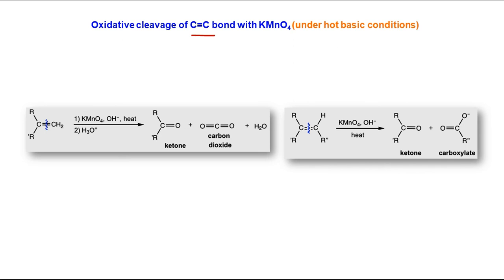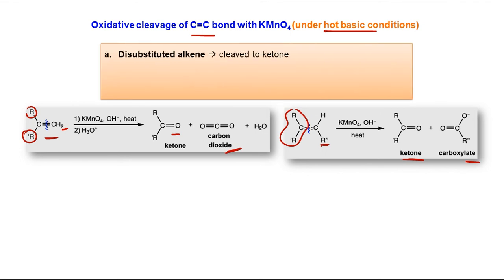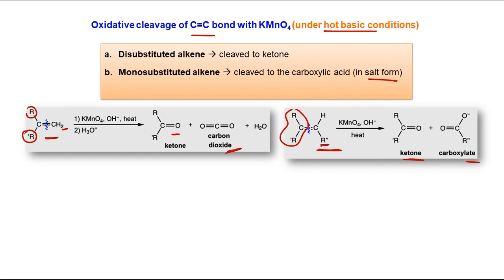We know that when we treat an alkene with KMnO4 under cold conditions it is dihydroxylation, but under hot basic conditions C-C bond cleavage is possible — this is known as oxidative cleavage. If the left-hand carbon has two substituents (disubstituted), you get a ketone; if there is no substitution (terminal CH2), you get CO2 and water. For monosubstituted alkene carbon, you get the salt of a carboxylic acid.